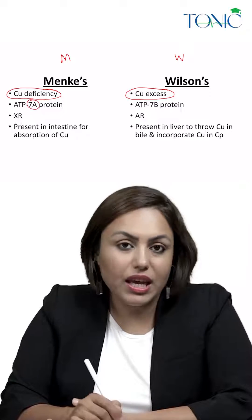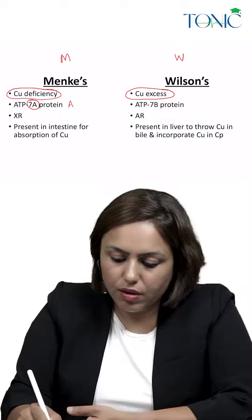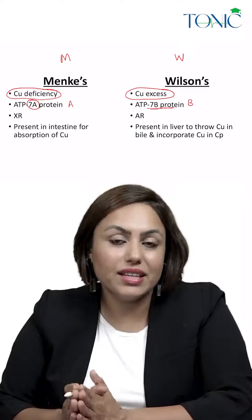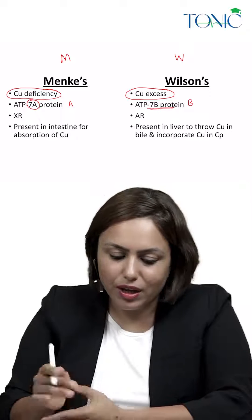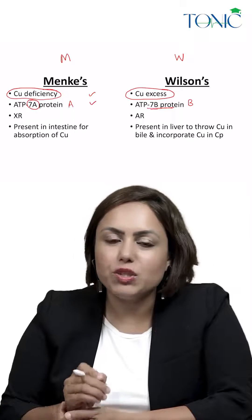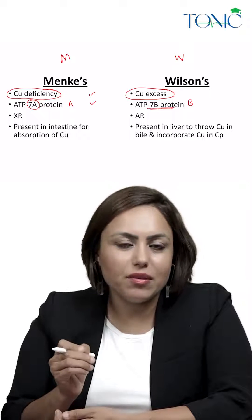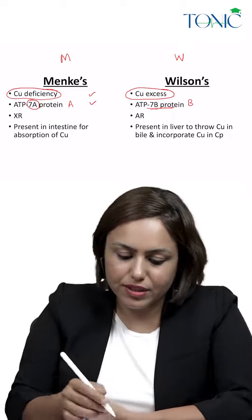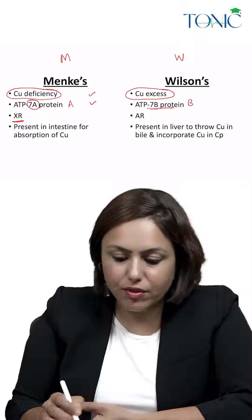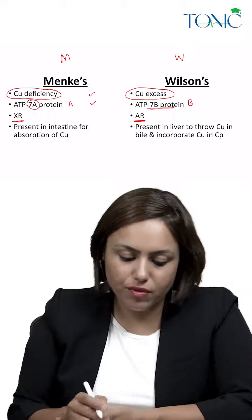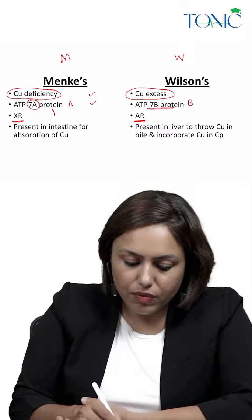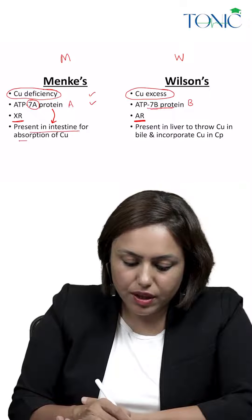The defective protein in Menkes is ATP7A, and in Wilson it is ATP7B — again, A comes before B alphabetically. Menkes is X-linked recessive, while Wilson is autosomal recessive.